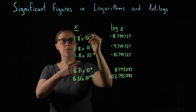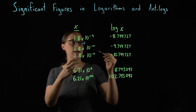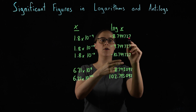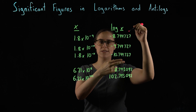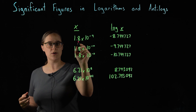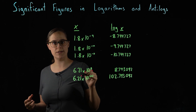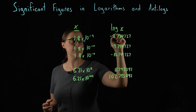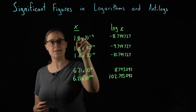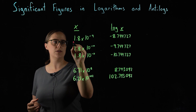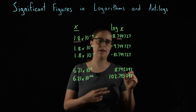One thing I want to point out: these first three numbers all have the same coefficient. They are all 1.8 times 10 to some power, and the logarithms of those values all have the same digits after the decimal place — they are all something .744727. This means that the coefficient is controlling digits after the decimal, and the exponent is controlling digits before the decimal. That is the key to our rule. So this calculated logarithm has as many significant figures after the decimal place as the original number has in its entirety. So 1.8 has two significant figures, and the log of that value has two significant figures after the decimal.